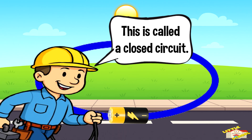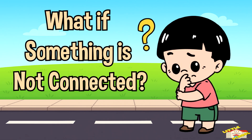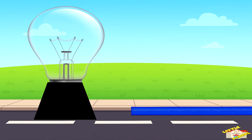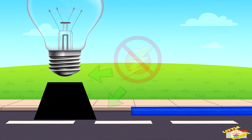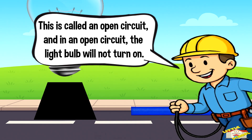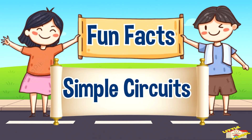This is called a closed circuit. What if something is not connected? If you leave a wire loose or don't connect the bulb properly, electricity can't travel all the way around. This is called an open circuit, and in an open circuit, the light bulb will not turn on.